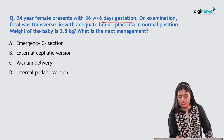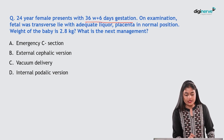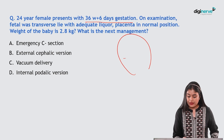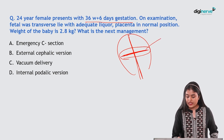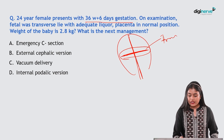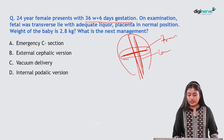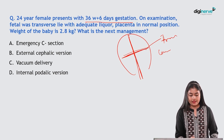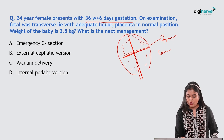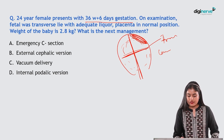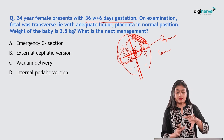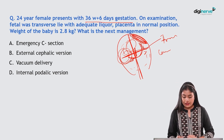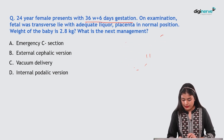Next question: a 24-year-old female at 36 weeks and 6 days gestation. On examination, the fetus is in transverse lie — meaning the fetal spine is perpendicular to the maternal spine. Liquor is adequate, placenta is normal (fundal anterior), baby weight is 2.8 kg. What is the next management?